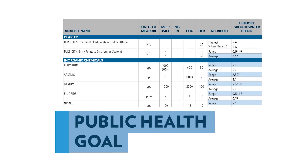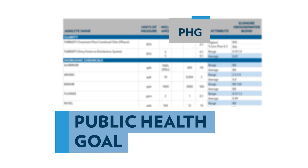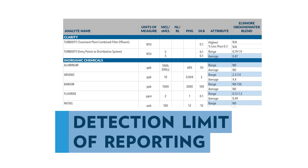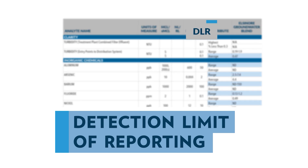PHG, short for Public Health Goal, are goals set by the state as to what level a contaminant no longer poses a significant health risk. DLR, or Detection Limit of Reporting, shows amounts of contaminants that can be reliably detected during testing. This helps you understand the concentration of substances in your water.